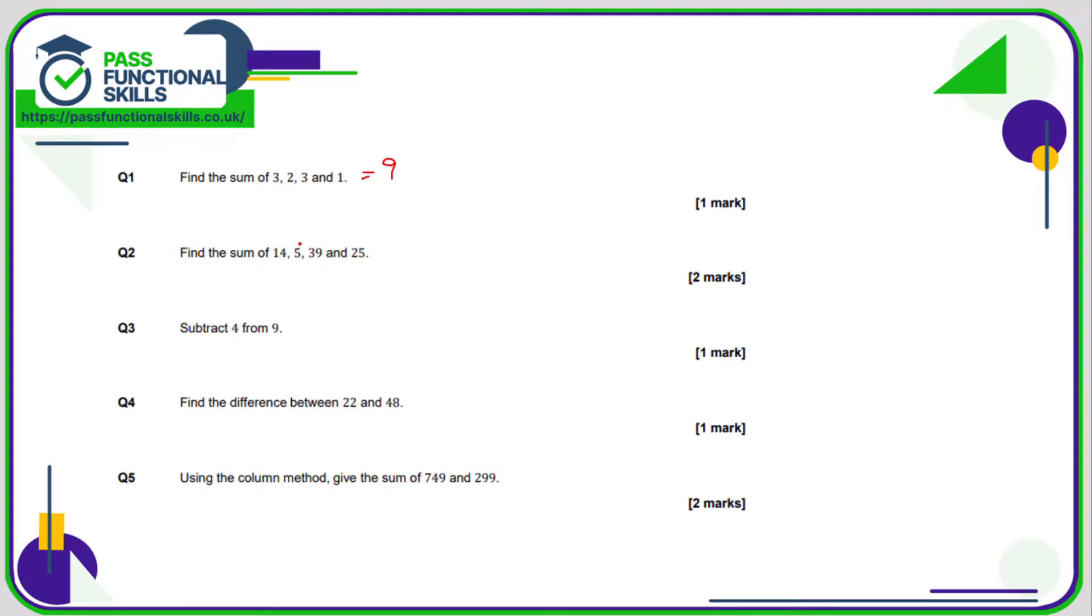Add them together. I'm going to make life slightly easier for myself because I can do 5 and 25 very easily, so that is 30. So I'm now adding 30, 39, and 14. You can use a column method if you want. 30 plus 39 is 69, and 69 and 14 I might use the column method for this.